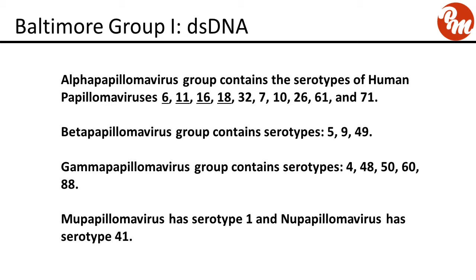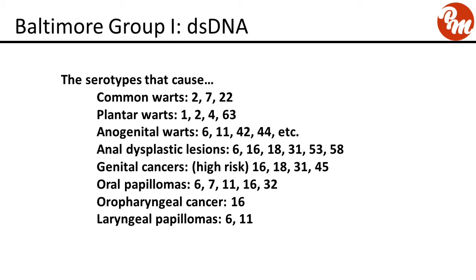Mu papillomavirus has serotype 1 and nu papillomavirus has serotype 41. Common warts: serotypes 2, 7, and 22. Plantar warts: 1, 2, 4, and 63. Anal genital warts: 6, 11, 42, 44, and others. Anal dysplastic lesions: 6, 16, 18, 31, 53, and 58. Genital cancers (high risk): 16, 18, 31, and 45. Oral papillomas: 6, 7, 11, 16, and 32. Oropharyngeal cancer: 16. Laryngeal papillomas: 6 and 11. HPV 6 and 11 are low risk; 16 and 18 are high risk.